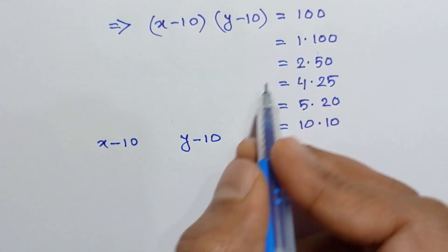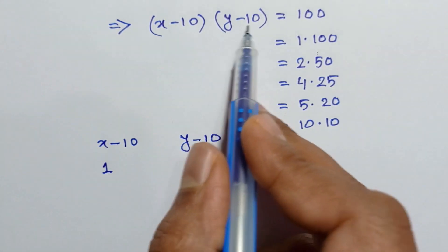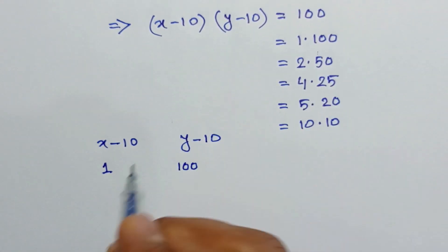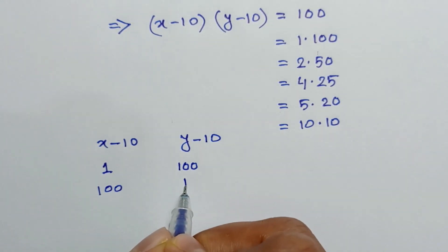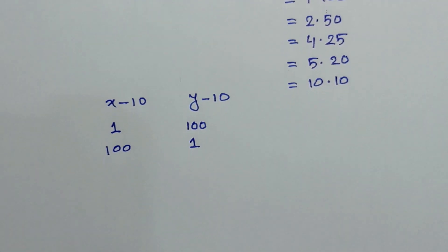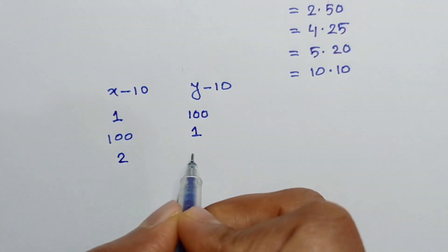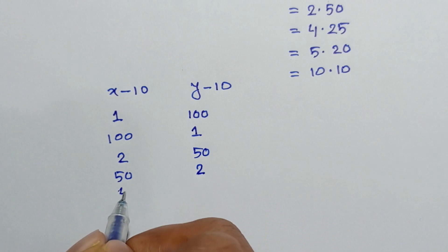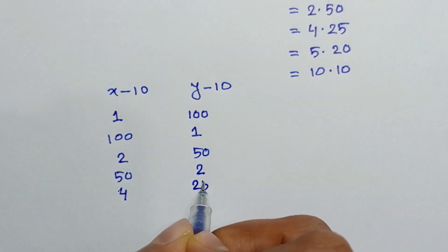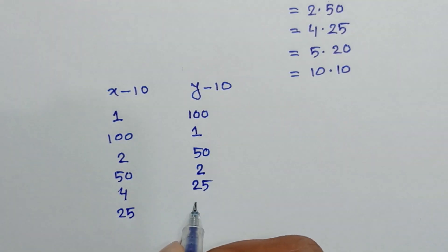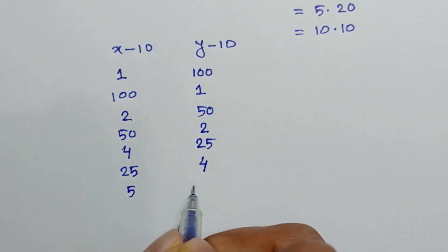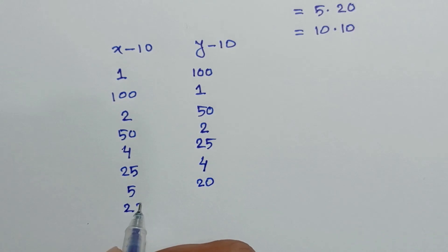So when (x minus 10) = 1, (y minus 10) = 100; when (x minus 10) = 100, (y minus 10) = 1; when (x minus 10) = 2, (y minus 10) = 50; when (x minus 10) = 50, (y minus 10) = 2; when (x minus 10) = 4, (y minus 10) = 25; when (x minus 10) = 25, (y minus 10) = 4; when (x minus 10) = 5, (y minus 10) = 20; when (x minus 10) = 20, (y minus 10) = 5; and when (x minus 10) = 10, (y minus 10) = 10.